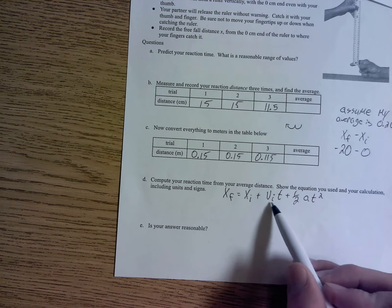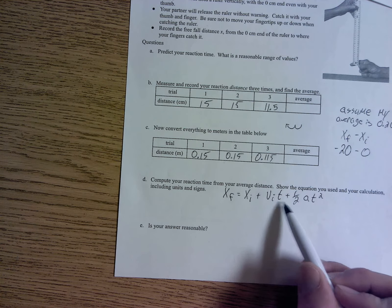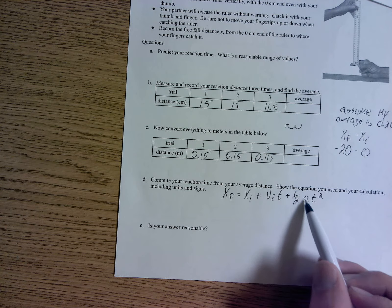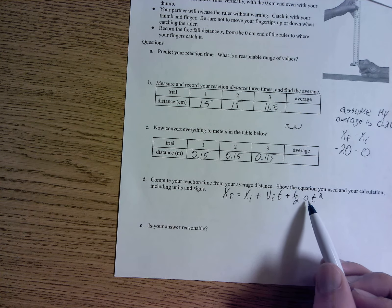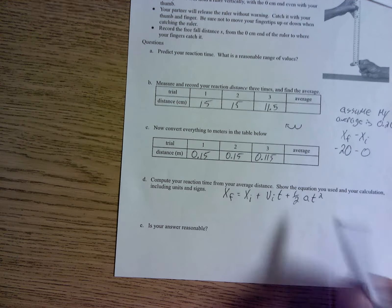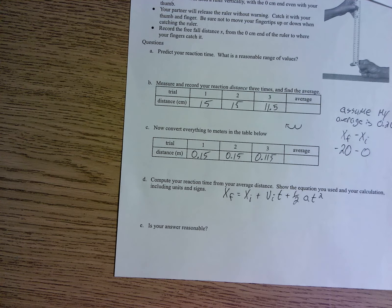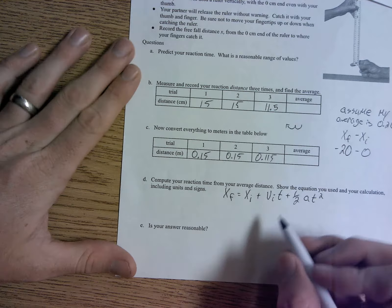There's the equation right there. xf is equal to xi plus vit, that's velocity initial times time, plus one half times your acceleration due to gravity, negative 9.8, and your time. So we don't know what the time is, that's what we're finding, right?